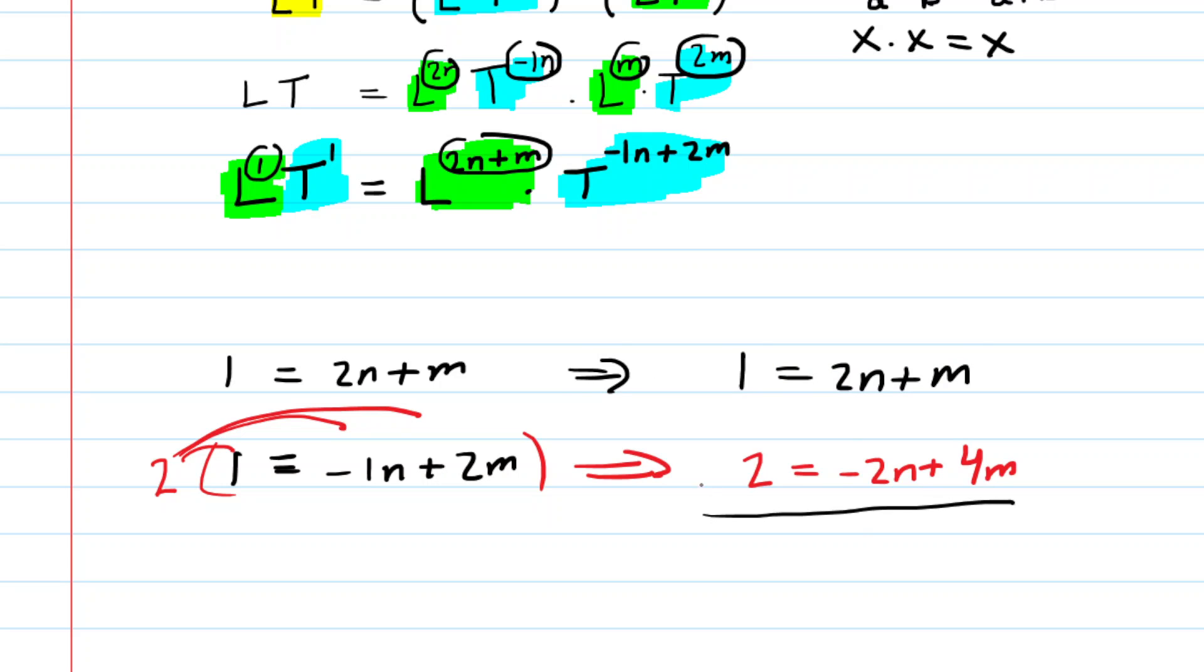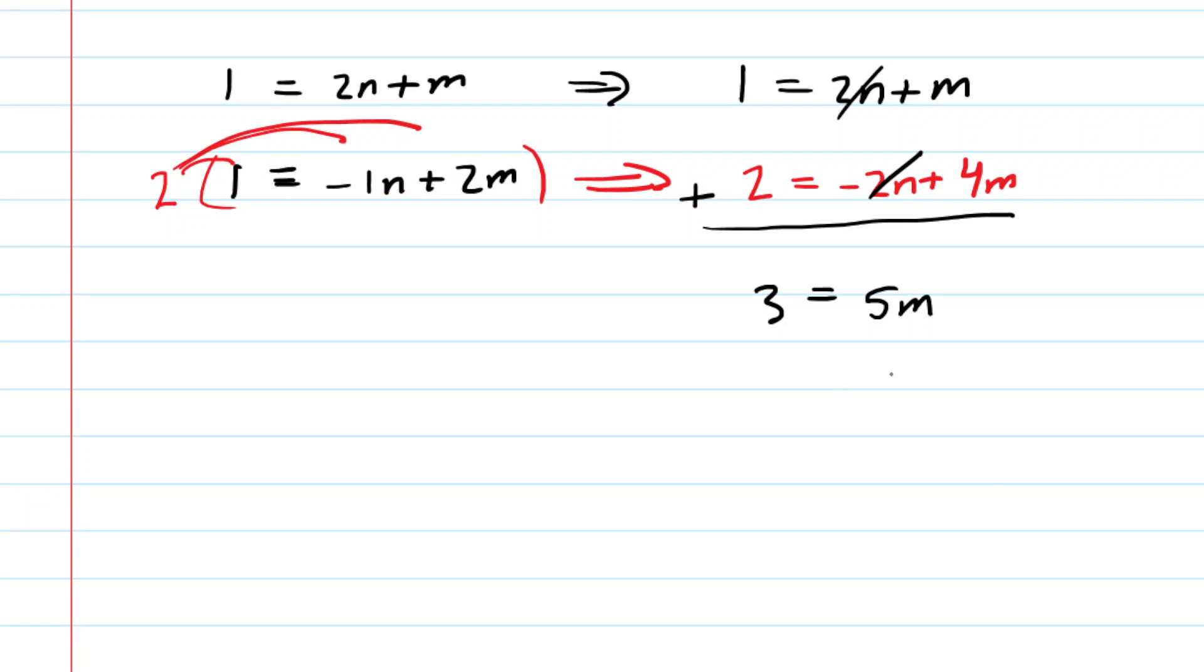And then we'll go ahead and add these equations together. On the left side, 1 plus 2 is 3. 2n plus negative 2n is 0. And then 1m plus 4m is 5m. And then we would divide both sides of this by 5, and we get 3 over 5 is equal to m. So that is the correct answer for the value of m.